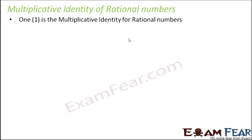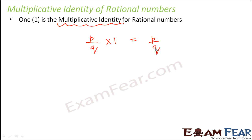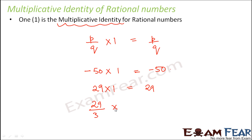Why is 1 given a special identity or a special name? That's because when you take any number and multiply it by 1, you get the same number. So if you have a rational number P by Q and multiply it by 1, you get P by Q. Consider any number — say minus 50 multiplied by 1 gives minus 50; 29 multiplied by 1 gives 29; 29 by 3 multiplied by 1 gives 29 by 3. Any number multiplied by 1 gives the same number.